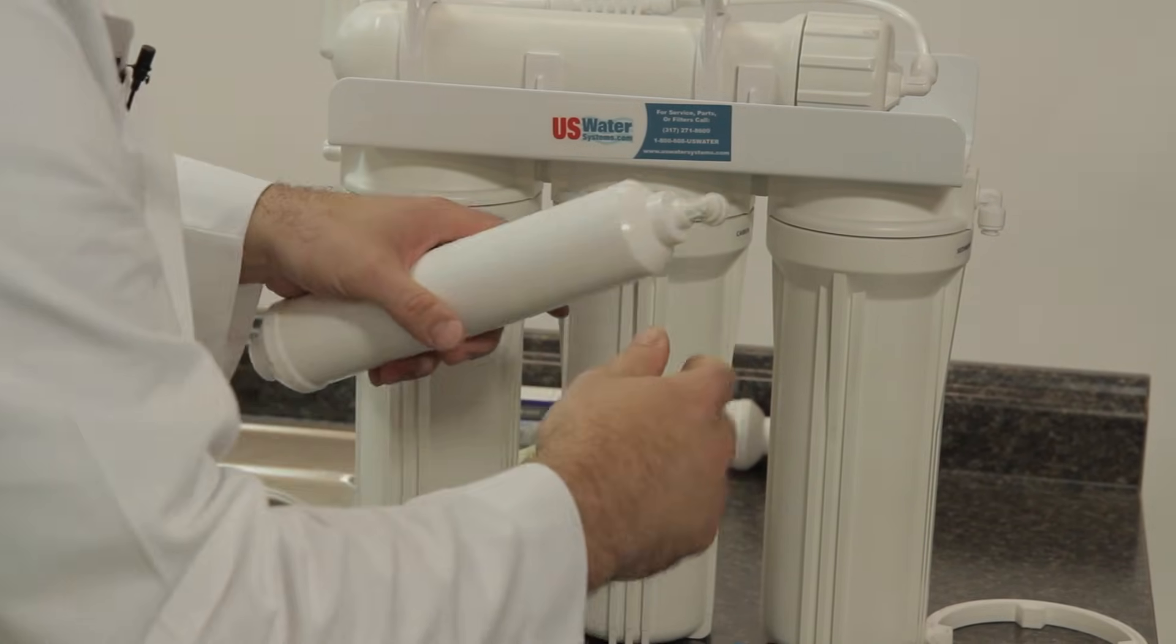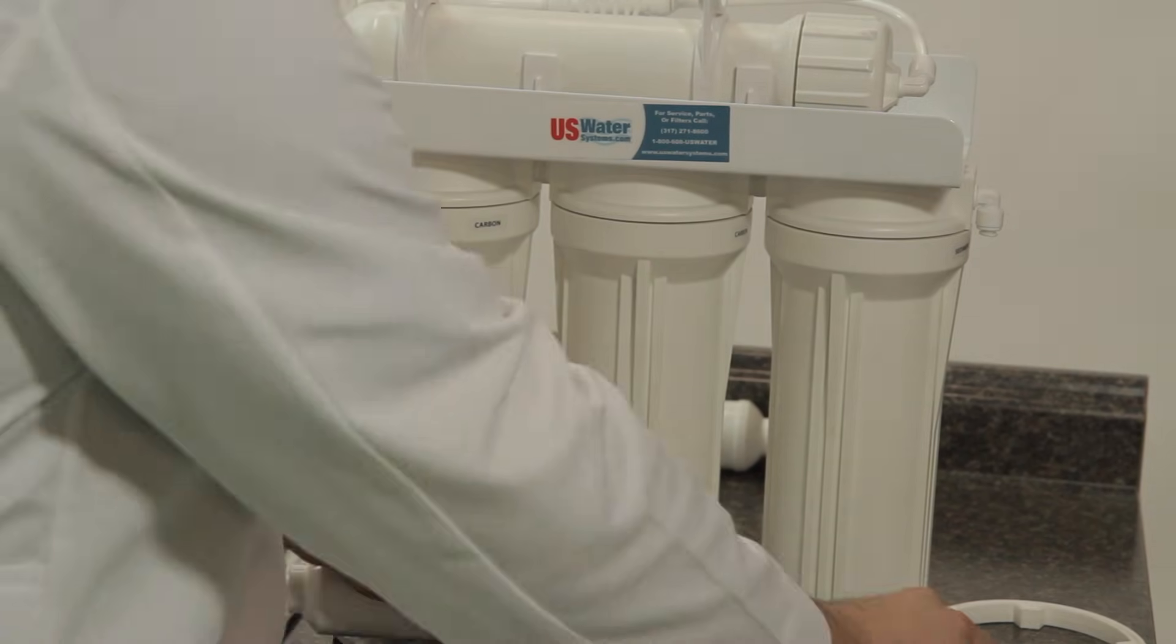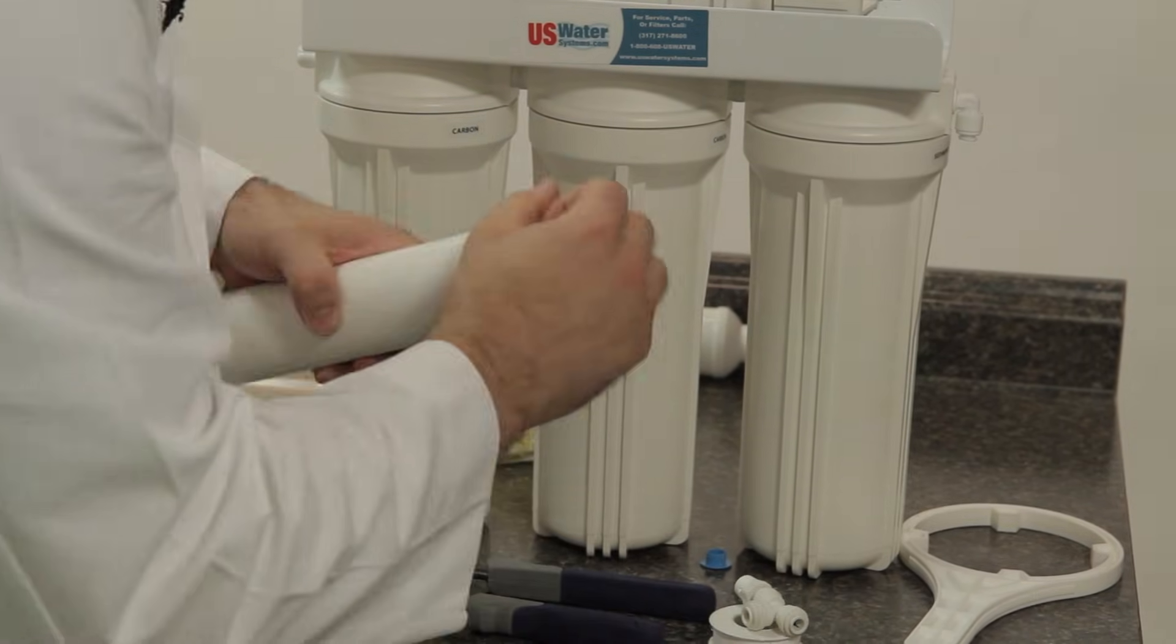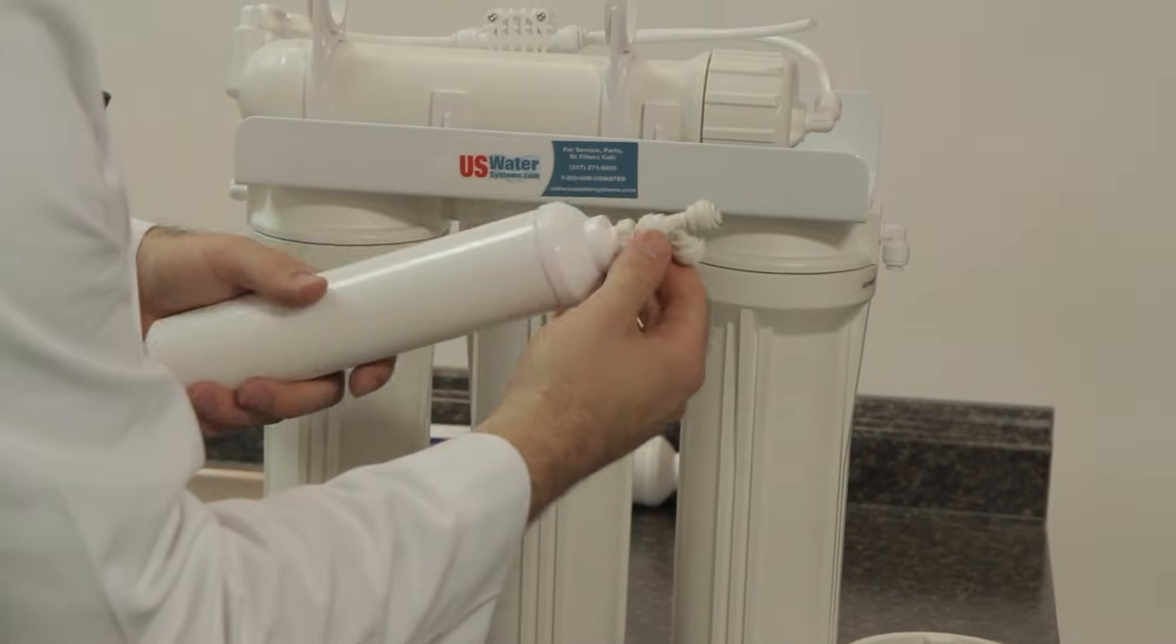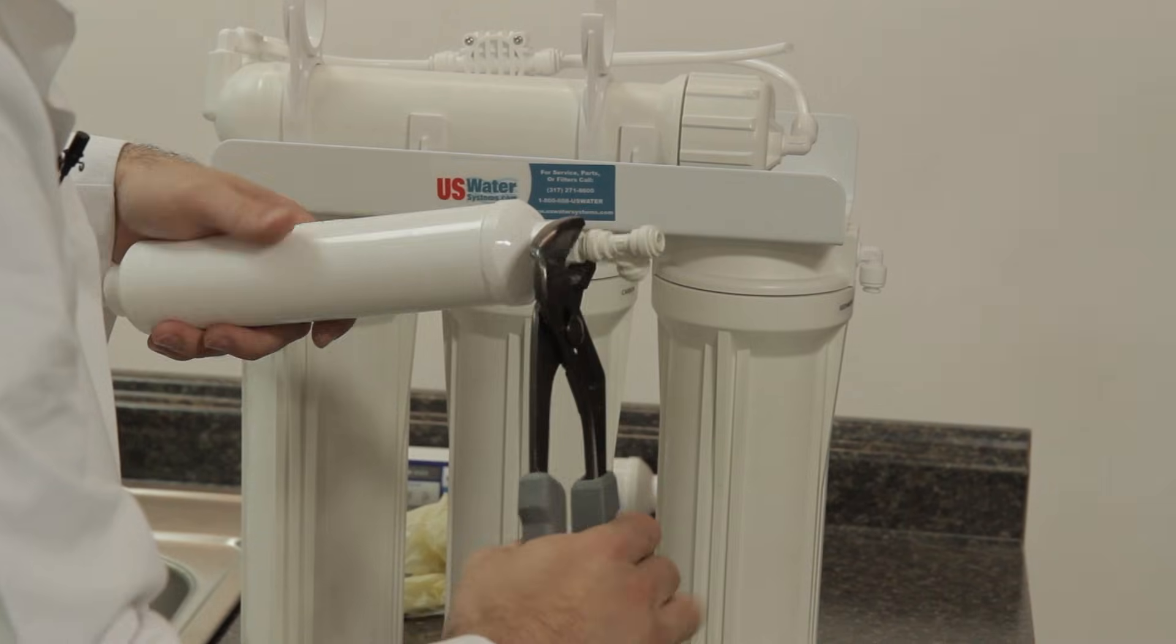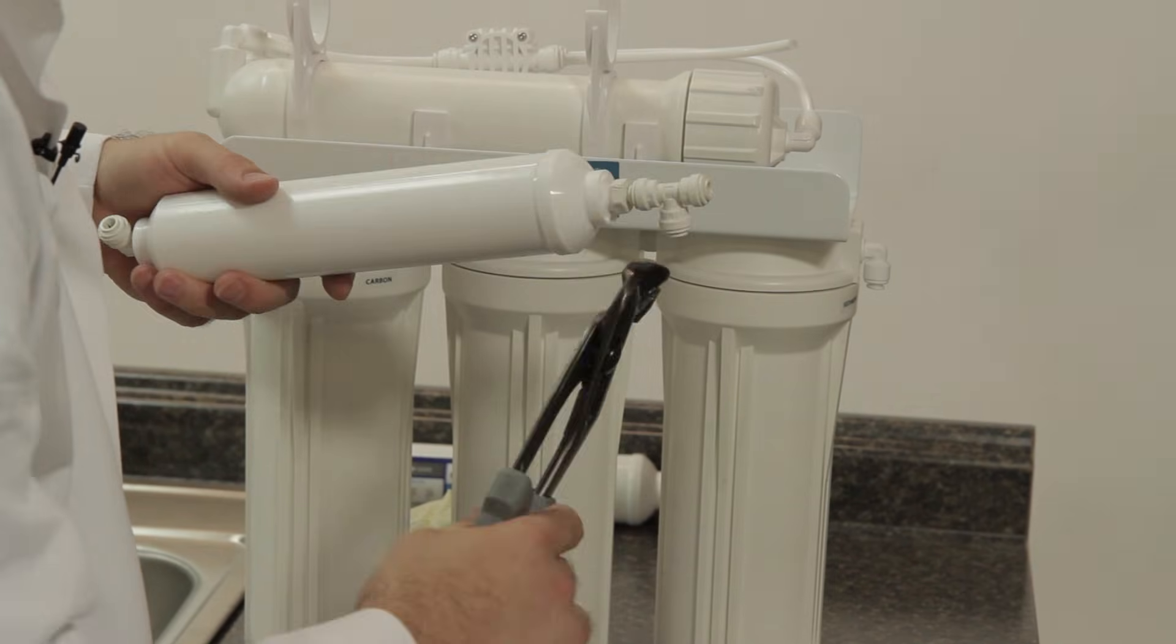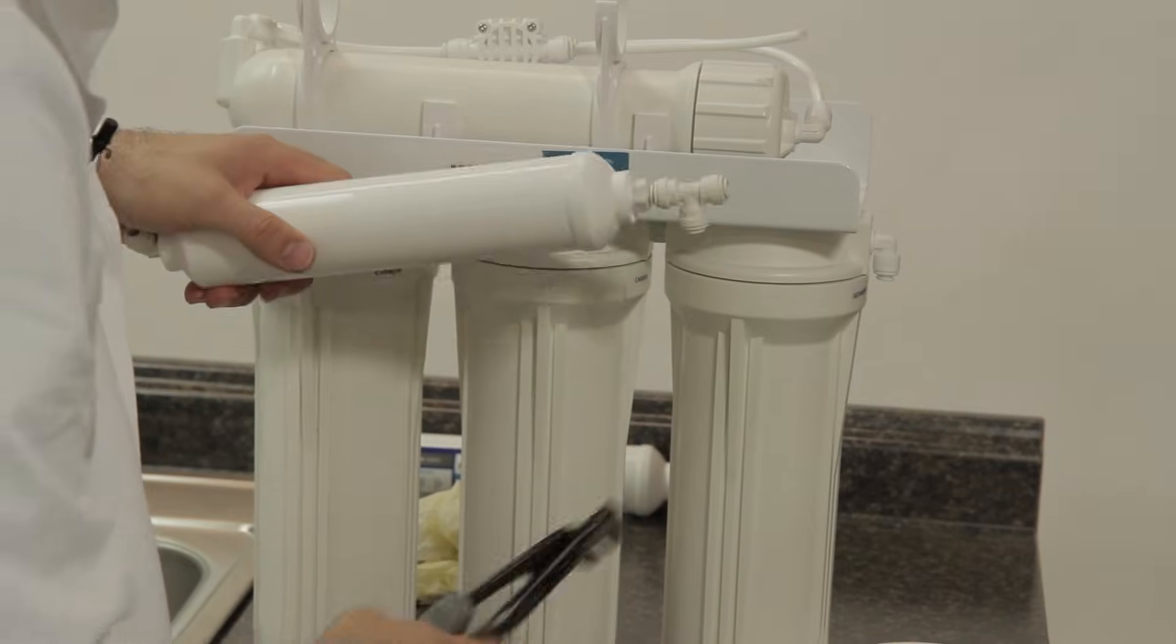These should be hand tight. This one here, because of the design, you are going to have to use pliers to tighten it, just be careful not to over tighten. If you ever do see a drip, you can always add a little quarter turn later, so don't worry about making it crazy tight in the very beginning.